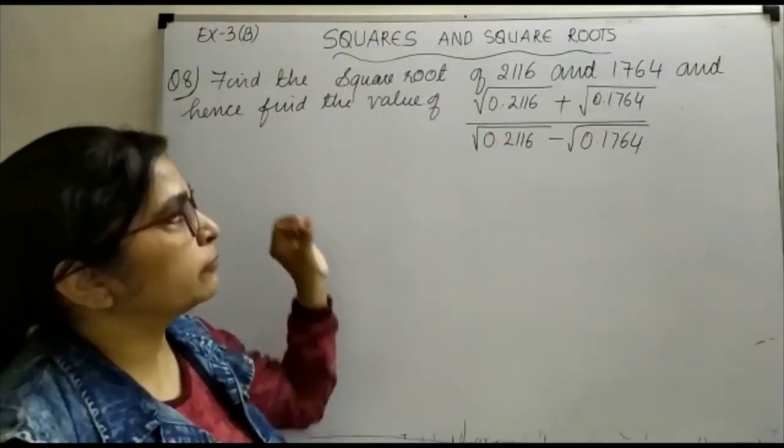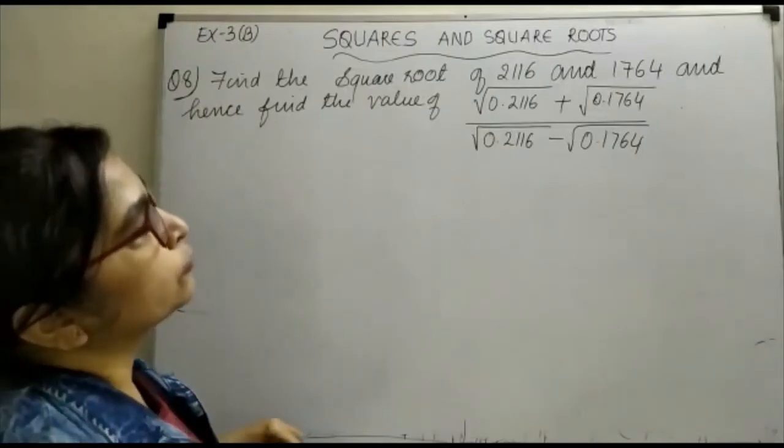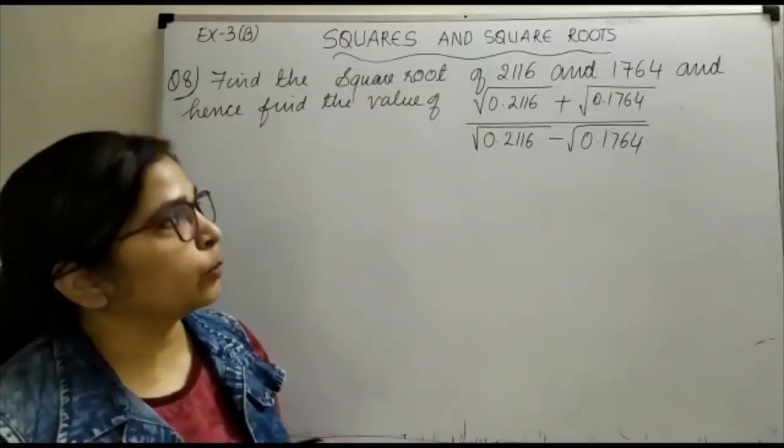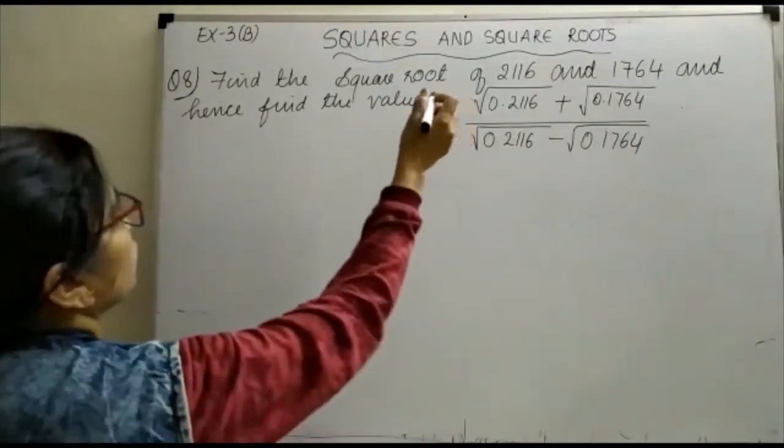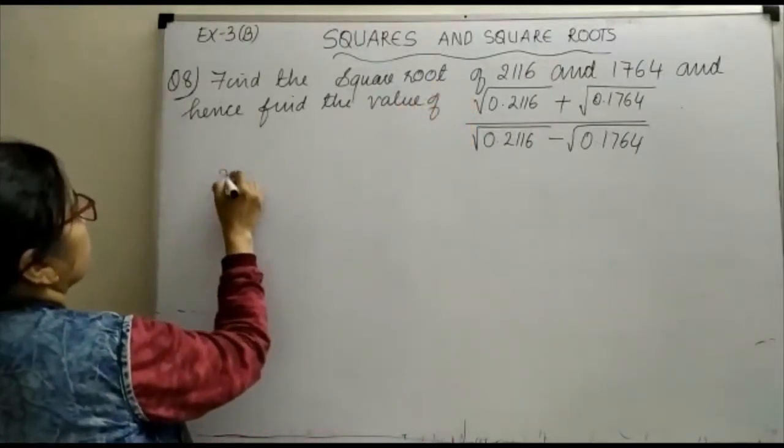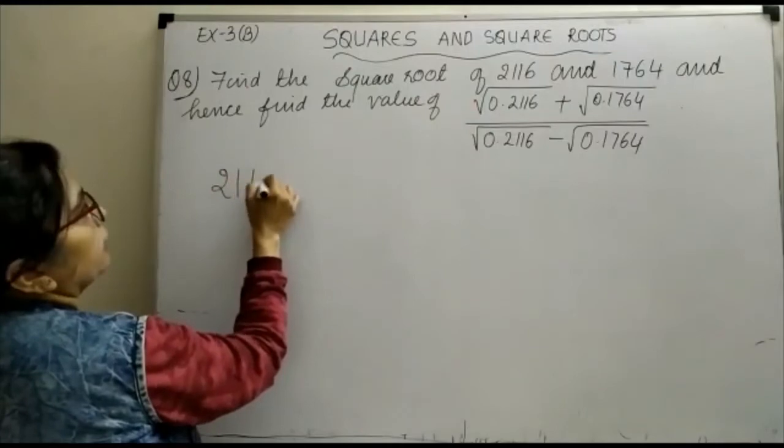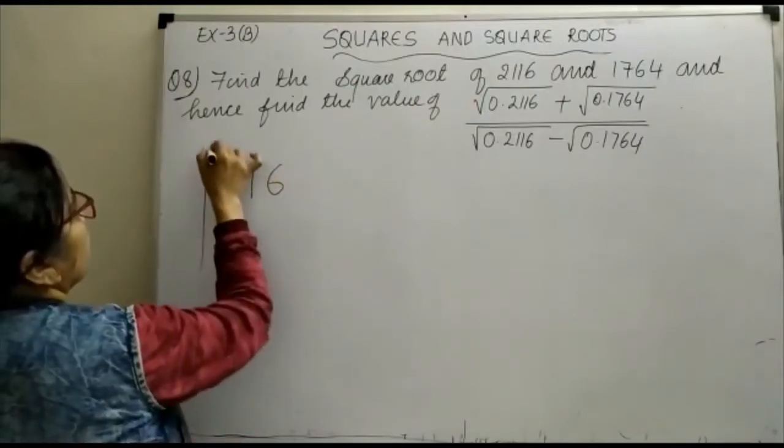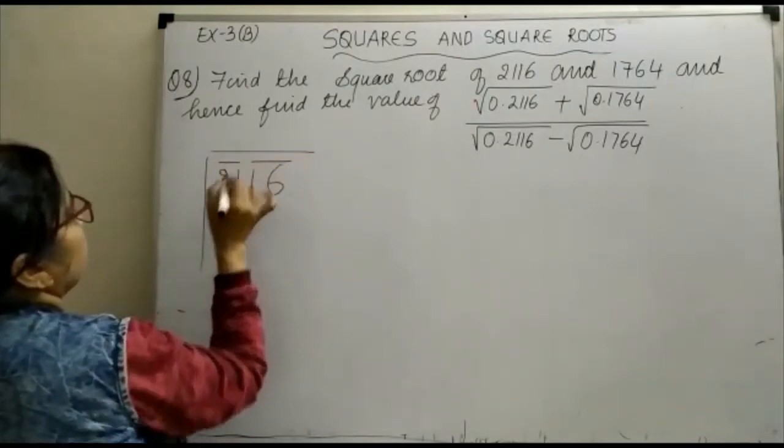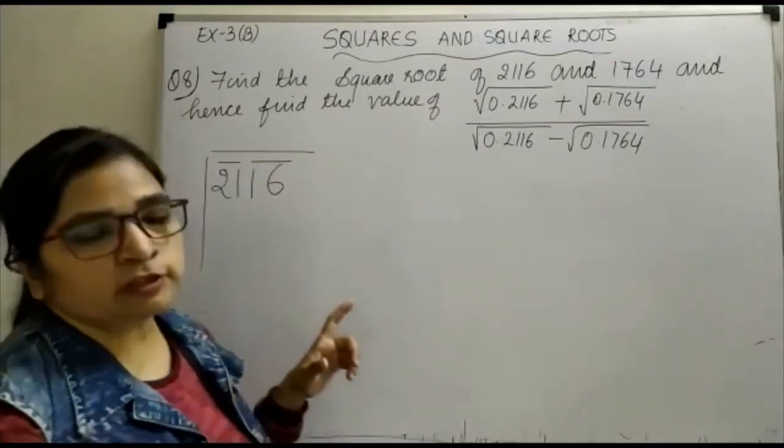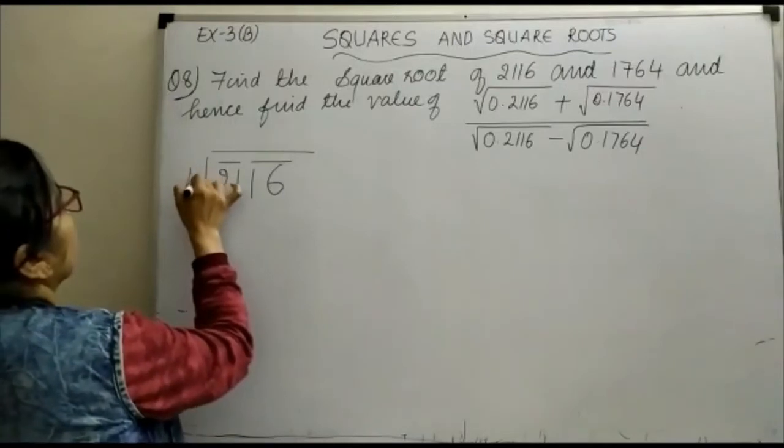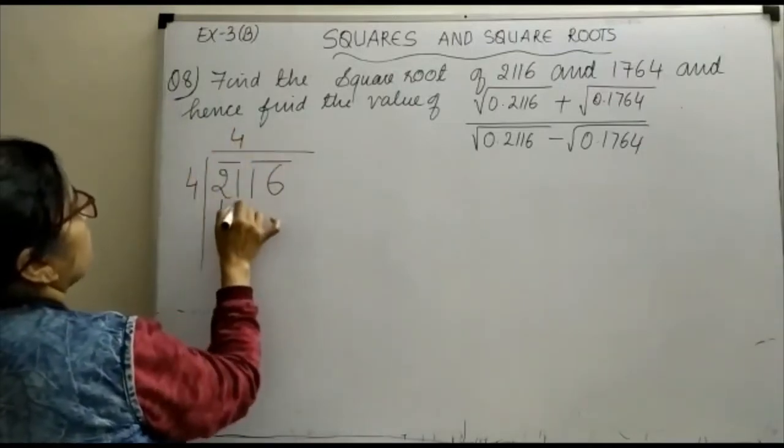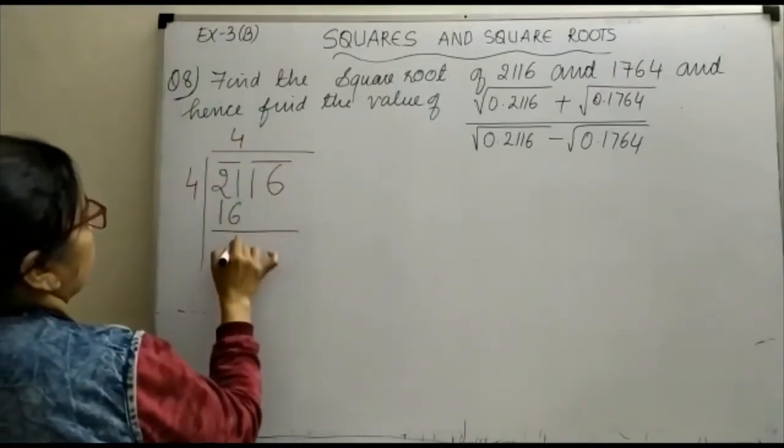let us work out the square root of 2116 and 1764 by long division method. For 2116, आप पहले long division method से pair करके निकालीजिए, ऐसा number लीजिए जिसका square 21 से कम हो - that's 4. 4 times 4 is 16. तो आपका ये 4 होगा, 4s are 16.